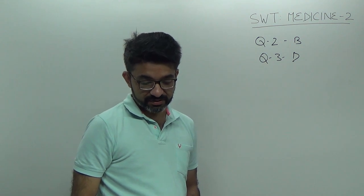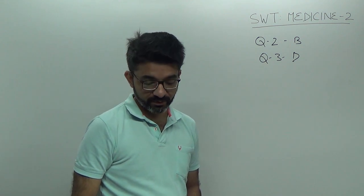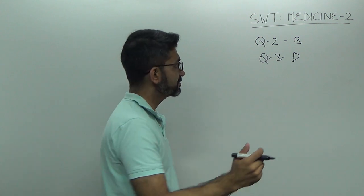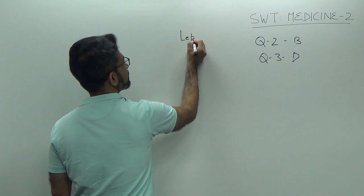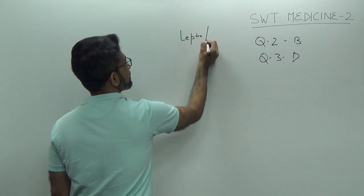Which adipokine reduces insulin resistance? That is question number 4, it is leptin. Remember, leptin and ghrelin.